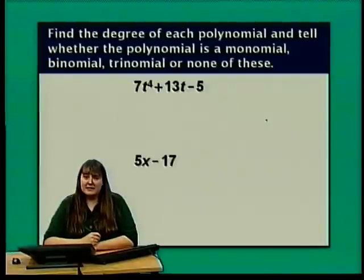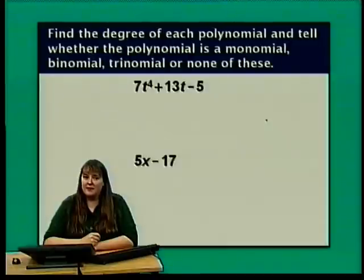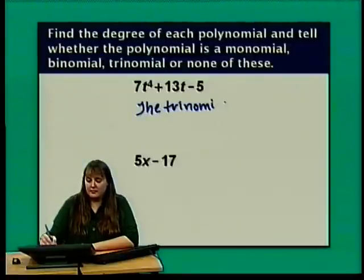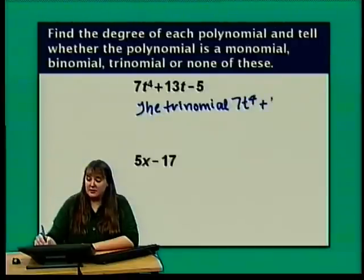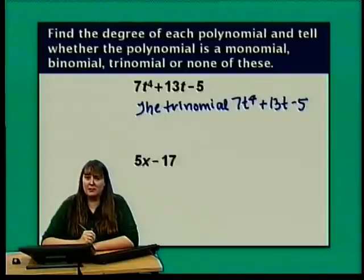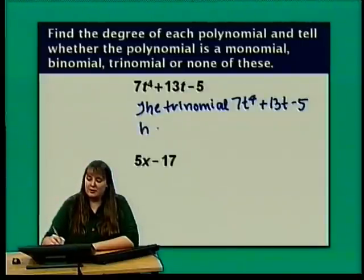The polynomial 7t to the 4th plus 13t minus 5 has 3 terms — 7t to the 4th, 13t, and negative 5 — so this is a trinomial. The highest degree term is 7t to the 4th, so the degree is 4. This trinomial has degree 4.